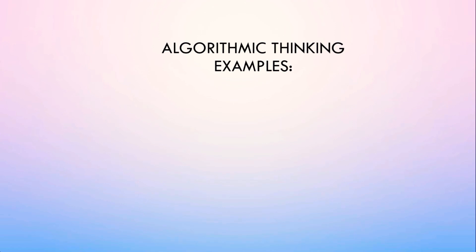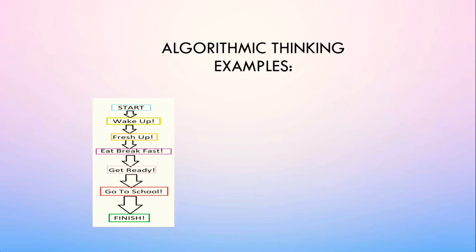Algorithmic Thinking Examples. Process for going to school: First we start, wake up, then we fresh up, eat breakfast, get ready, then go to school. Then our process is finished.